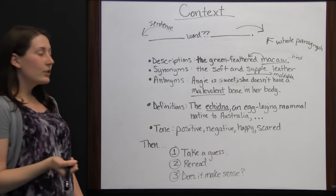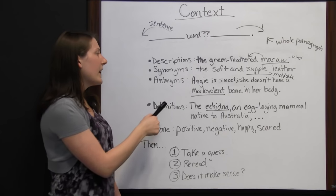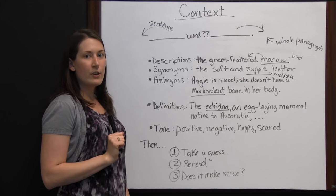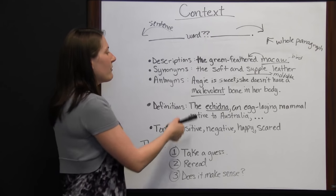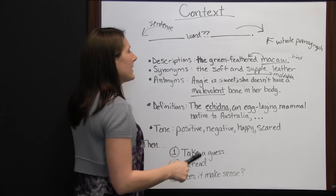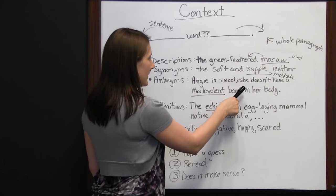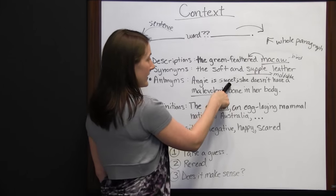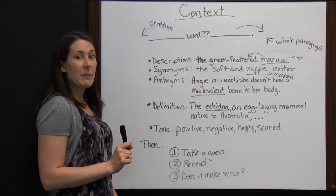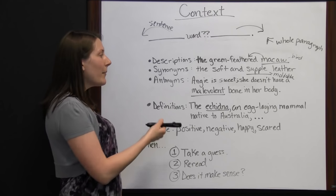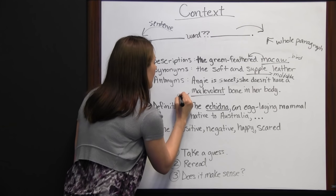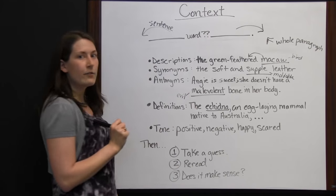Another clue you can look for are antonyms. For example: 'Angie is sweet. She doesn't have a malevolent bone in her body.' You may not know what 'malevolent' means, but you probably know what 'sweet' means. If she isn't malevolent and she is sweet, then 'malevolent' must be something bad — the opposite of sweet. In reality, 'malevolent' means evil.